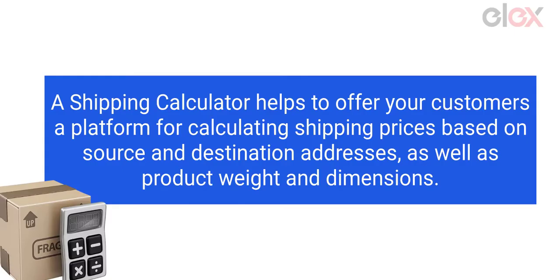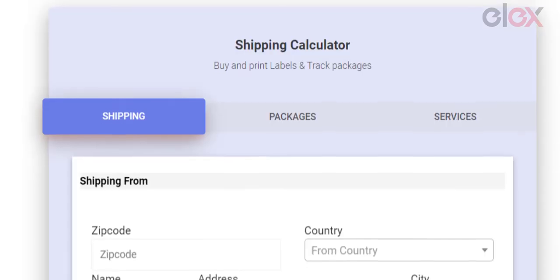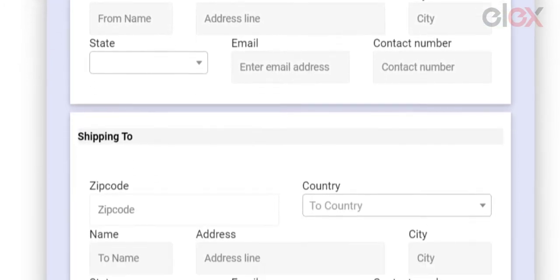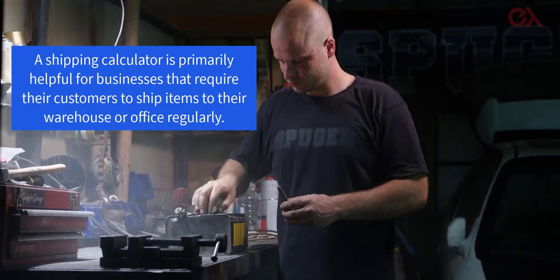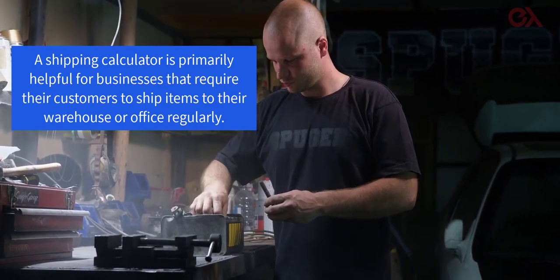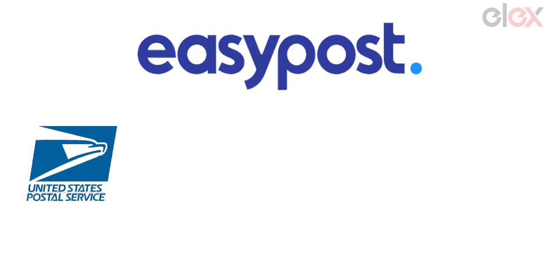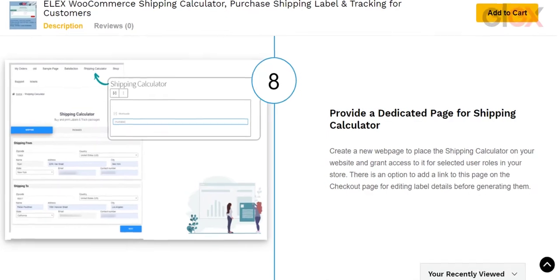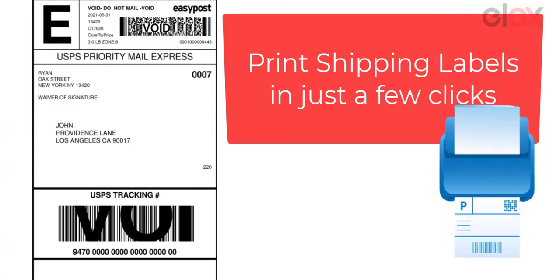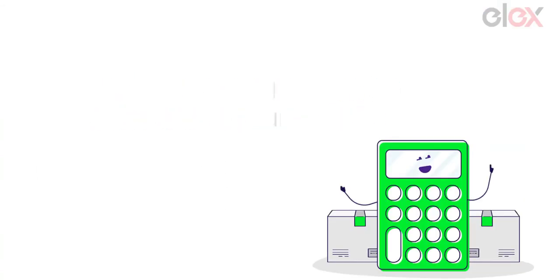So what is a shipping calculator? A shipping calculator helps offer your customers a platform for calculating shipping prices based on source and destination addresses, as well as product weight and dimensions. It is primarily helpful for businesses that require their customers to ship items to their warehouse or office regularly. Through EasyPost, your customers can compare shipping costs from major carriers such as USPS, UPS, FedEx, and Canada Post, and if you have a dedicated shipping calculator on your website, they can also print shipping labels in just a few clicks.